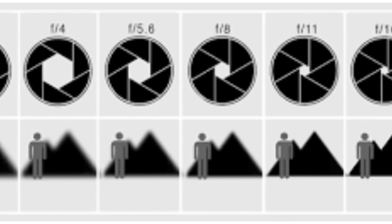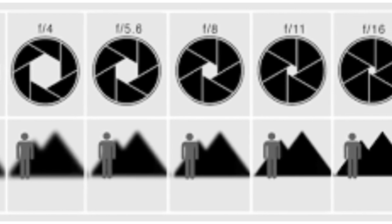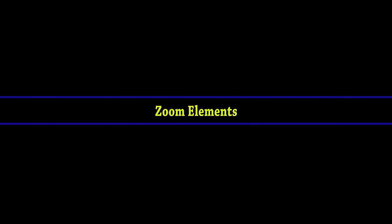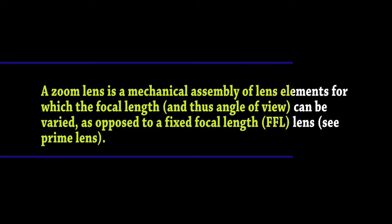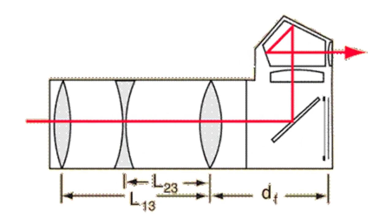Zoom elements. If you just bought your first camera, chances are you got a zoom lens with it. Zoom lenses allow you to shift between focal lengths from wide to telephoto, depending on your lens focal range, by turning the lens ring.